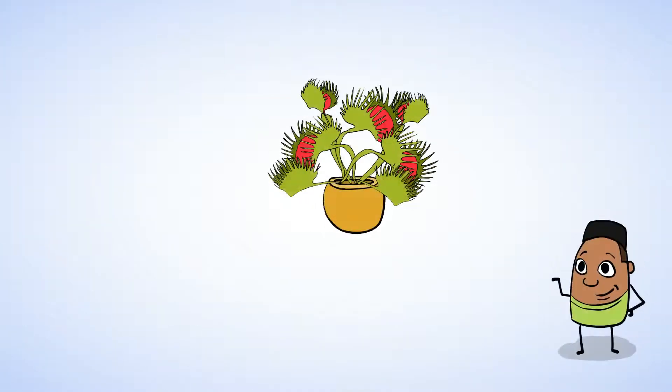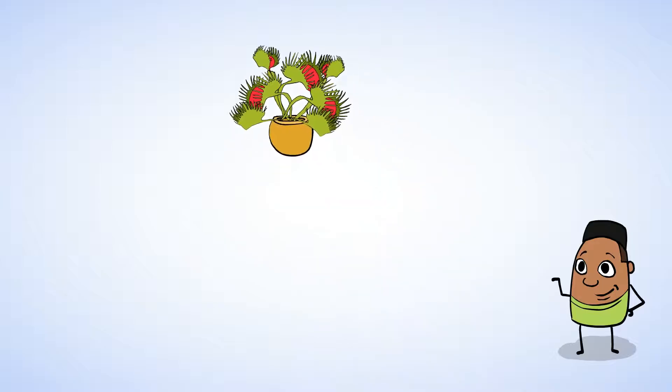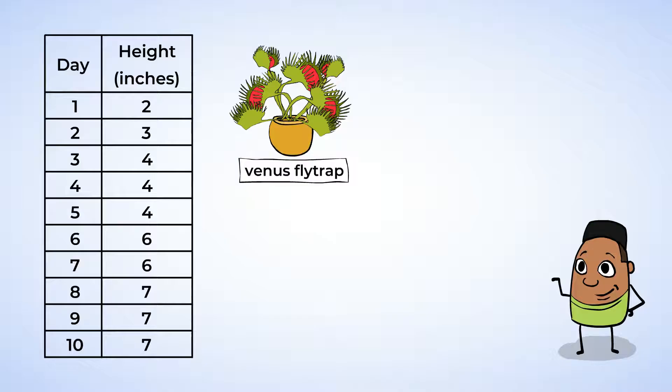Over here is the famous insect-eating plant called the Venus flytrap. This one is young. Next to the display, they wrote different heights of the plant. Cool! They did all the measuring for us! They measured the height of the plant once a day for 10 days. What unit did they use to measure? That's right, inches! We can use this data to make a line plot.